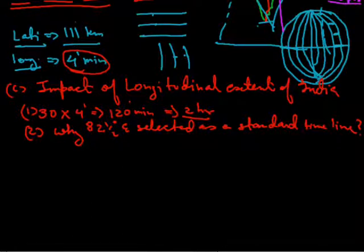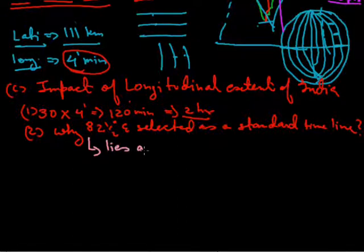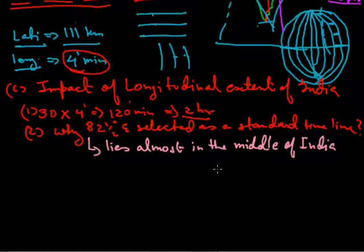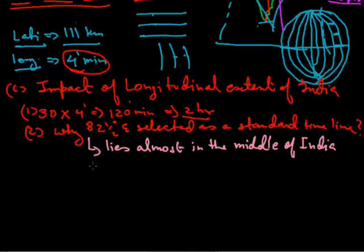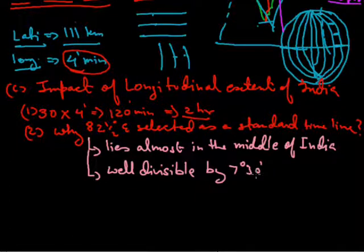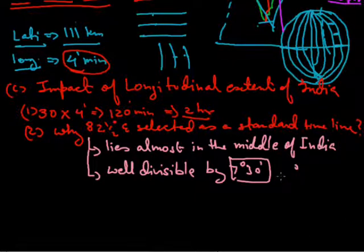The first condition is that the line must lie almost in the center of India. The second condition is that the line must be well divisible by 7 degrees 30 minutes with no remainder. When we divide 82 and a half degrees by 7 degrees 30 minutes, the remainder is zero, so it satisfies this condition.